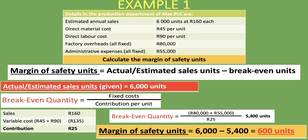What does this mean? Why do we calculate the margin of safety units? We calculate it to see by how much our sales units have to fall before it starts being unprofitable or before we start making a loss. If our sales fall by 600 units or more, we will stop being profitable. If our sales units drop by more than 600, we will start incurring losses. The greater the margin of safety units, the better it is for the company, as the company is able to deal with fluctuations in sales. The smaller the margin of safety units, the less room the company has to deal with those fluctuations.